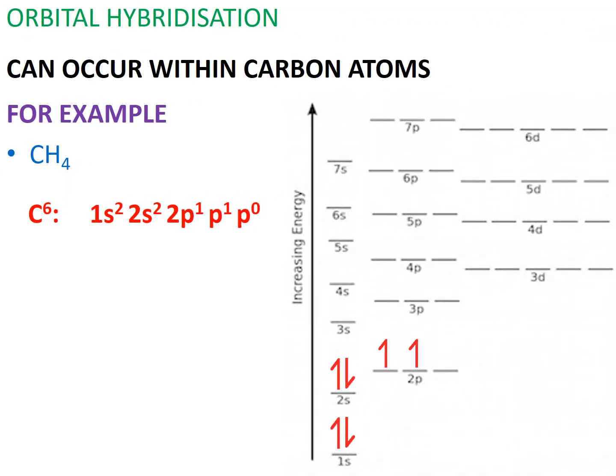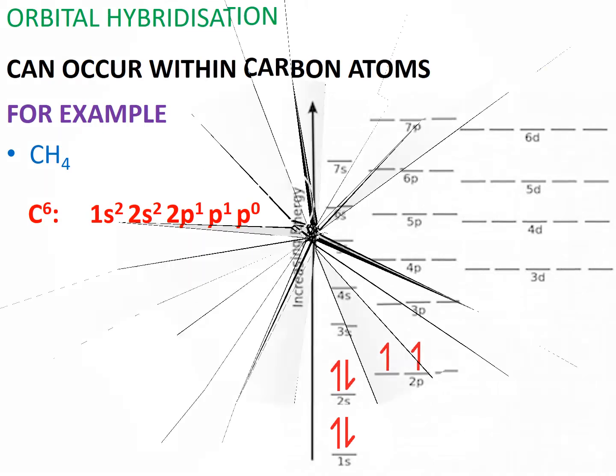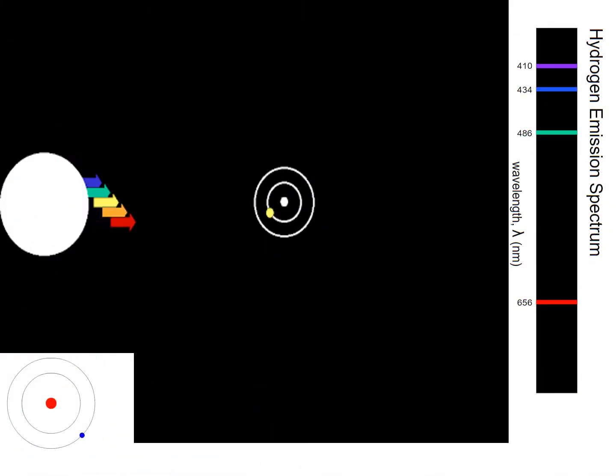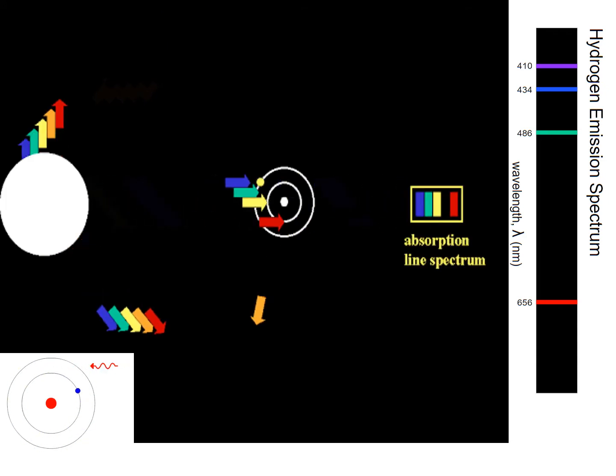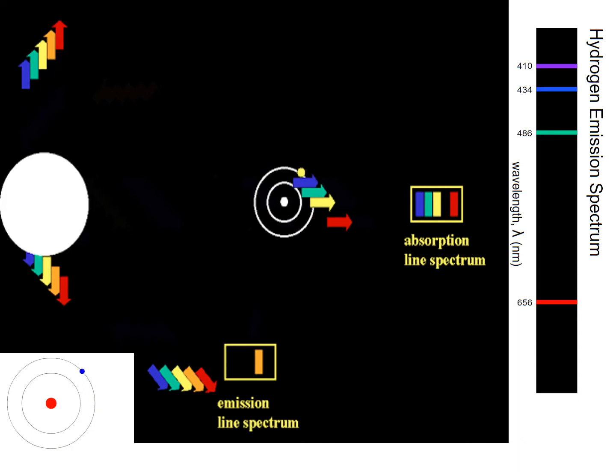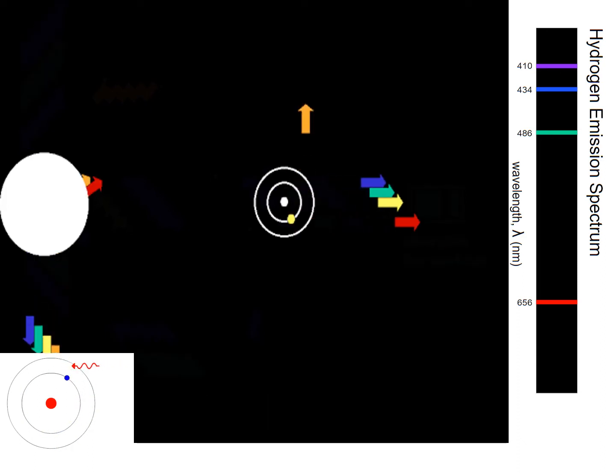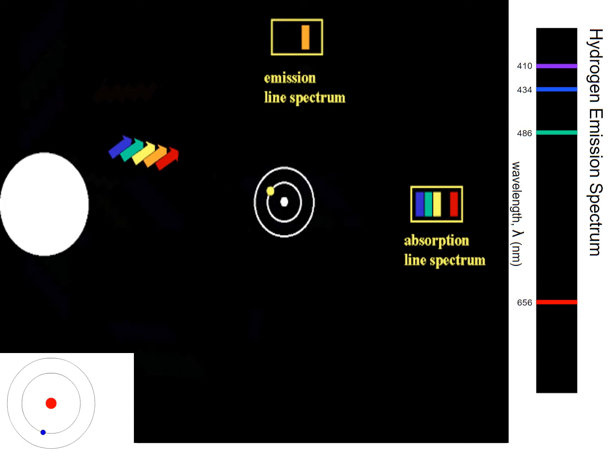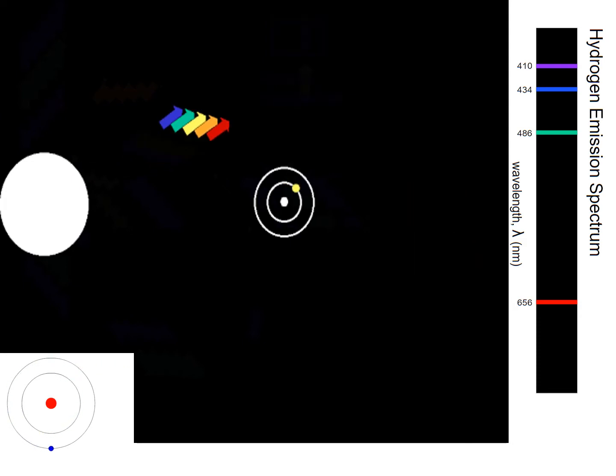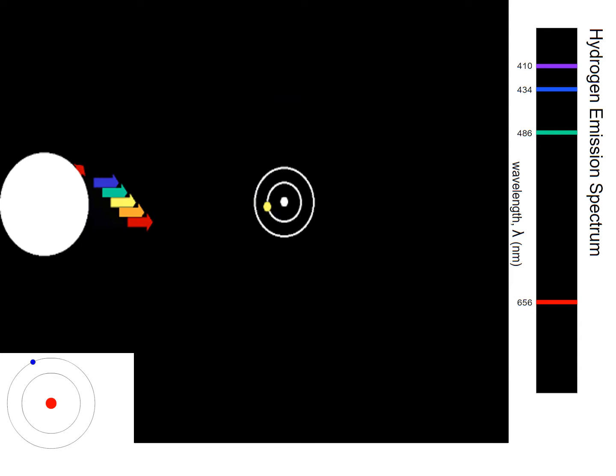The electron configuration written here for carbon is for when carbon is in its ground, relaxed, or natural state. However, if there is enough free energy around a carbon atom, its electrons can absorb it. And like the emission spectra Bohr was studying, the electrons that absorb enough energy can get promoted to a higher energy level, thus causing carbon to be in an excited state.